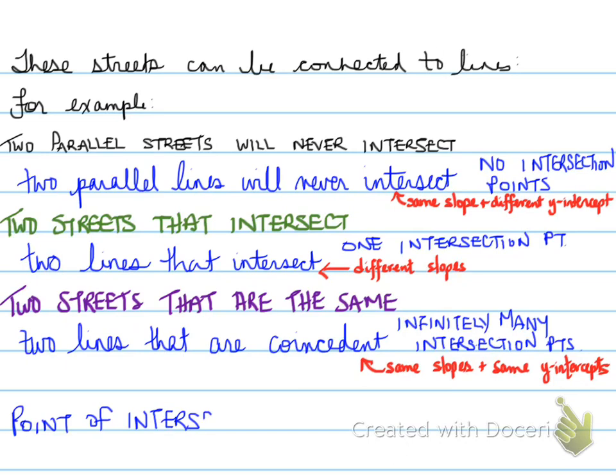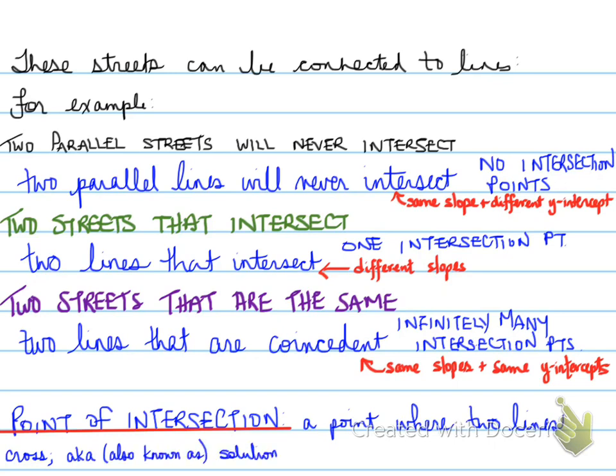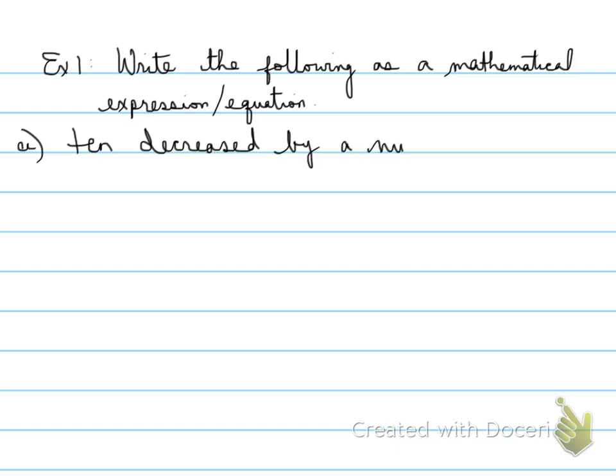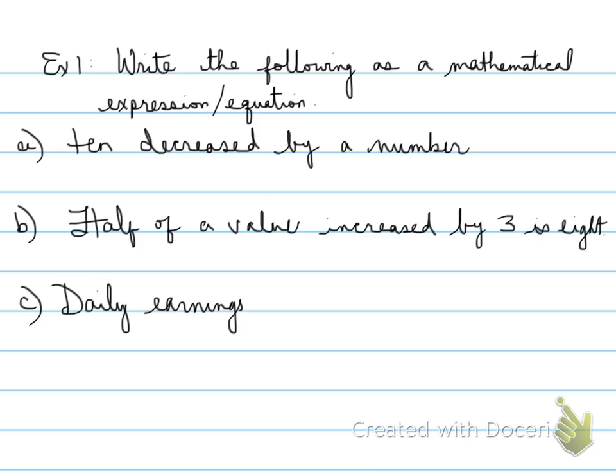Essentially, a point of intersection is basically a point where the two lines cross, also known as a solution to a linear system. So when I ask you for a solution to a linear system, I'm asking you for the point of intersection. All right, let's look at example number one. Write the following as a mathematical expression equation. So we have expressions and equations to do with the following.